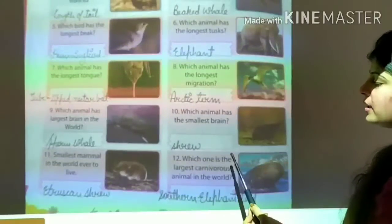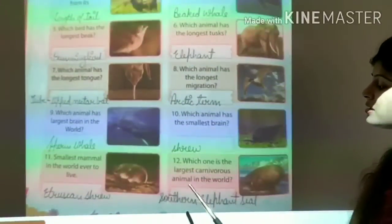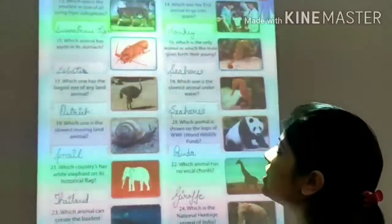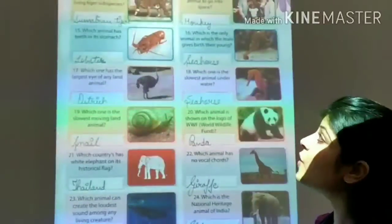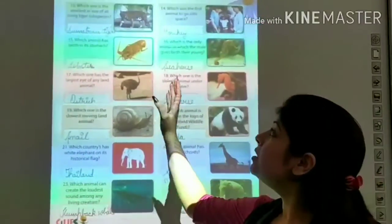Next question is, which one is the largest carnivorous animal in the world? It's southern elephant seal. Now, question number 13: which one is the smallest in size of all living tiger subspecies? It's Sumatran tiger.